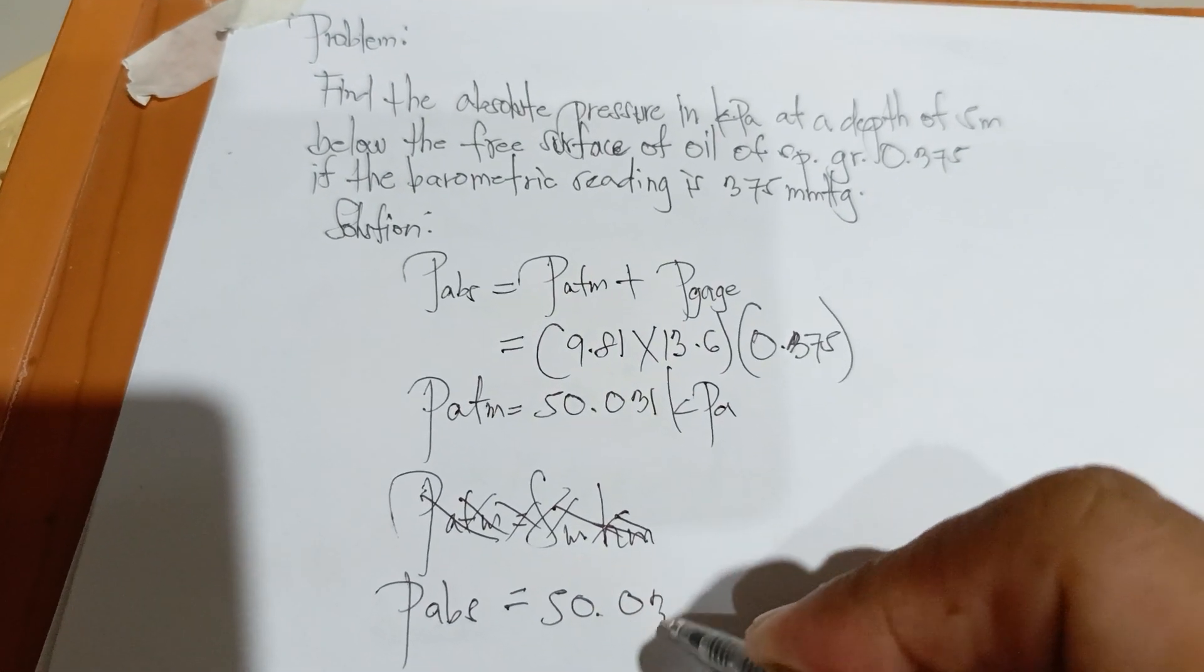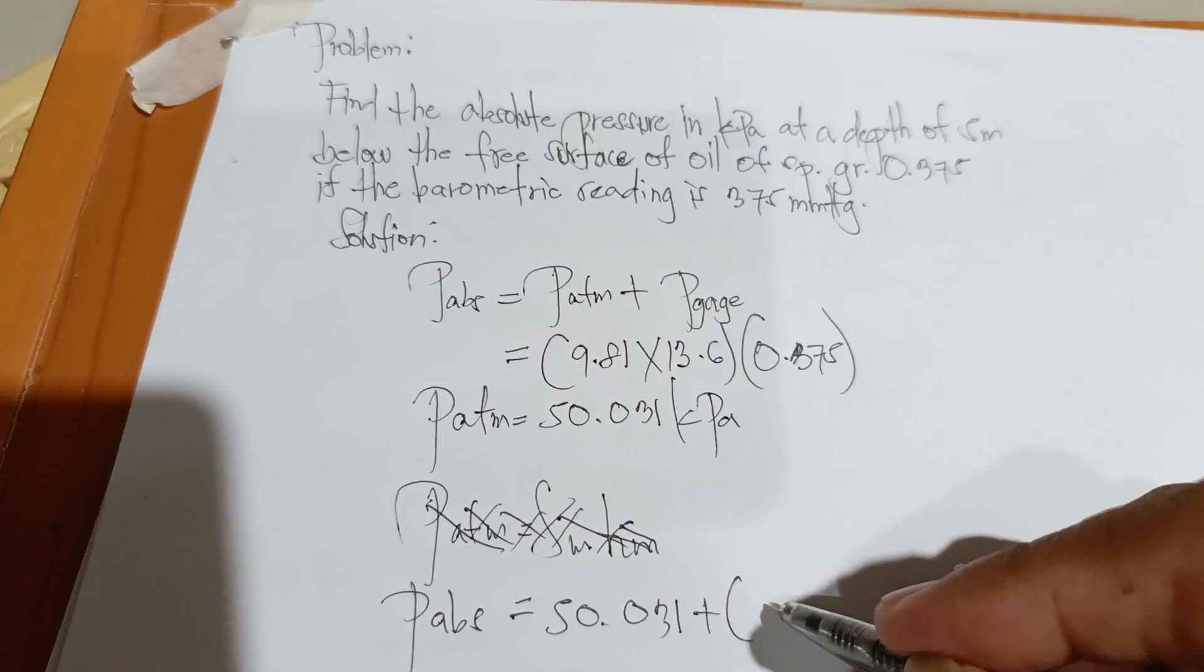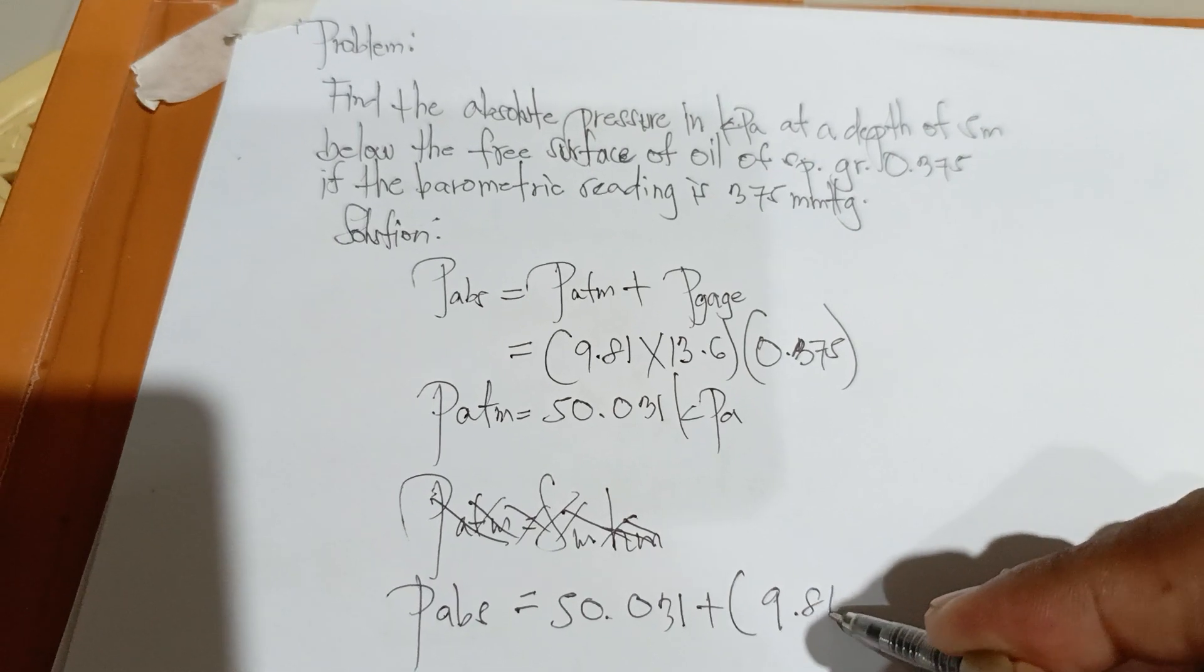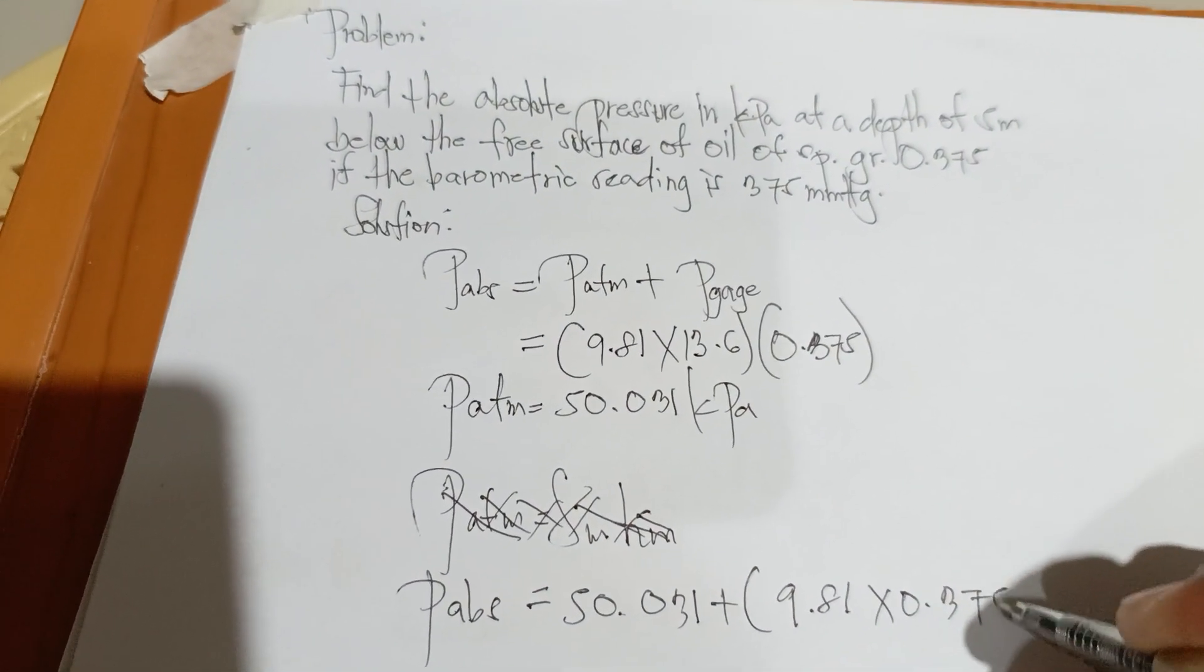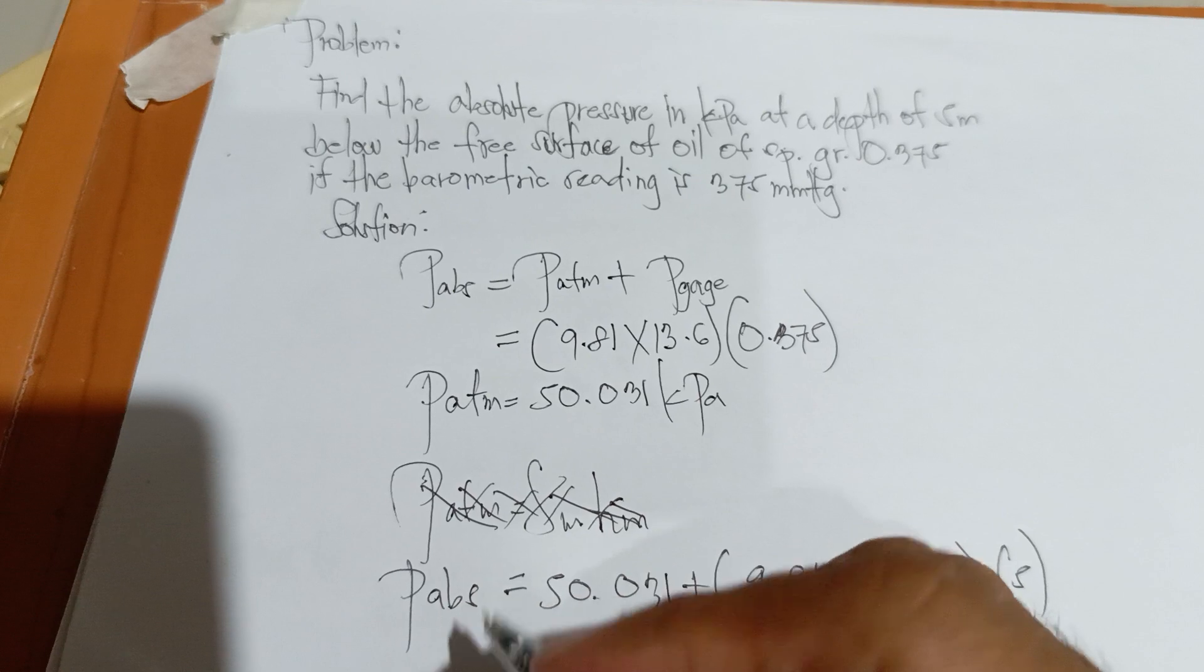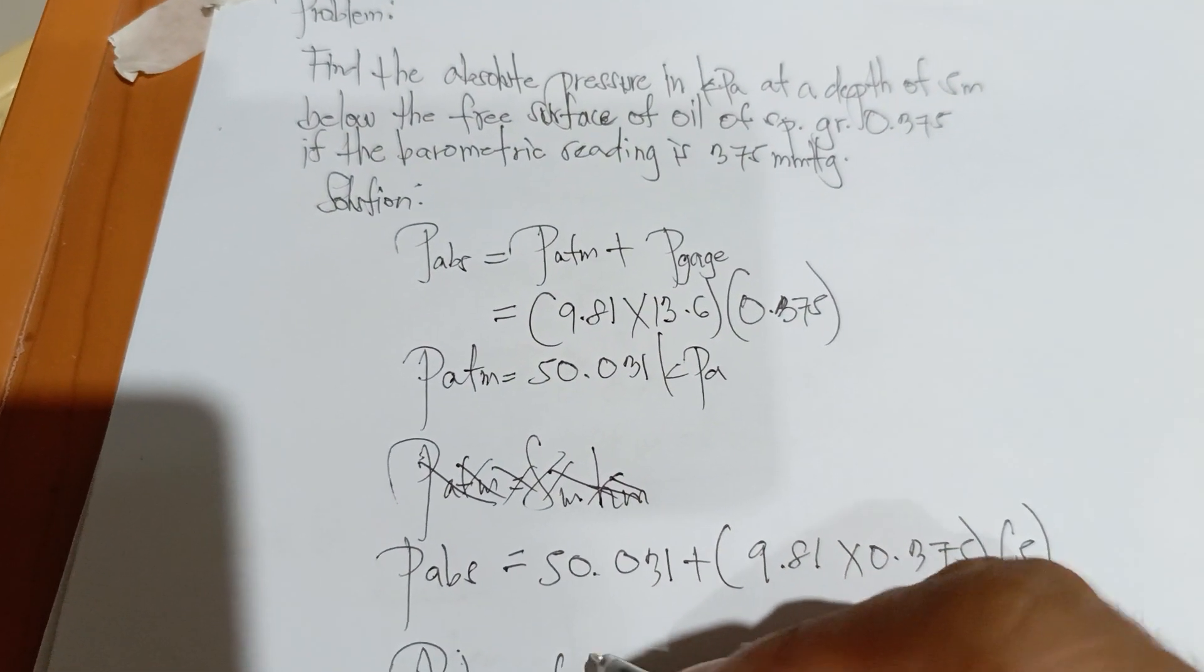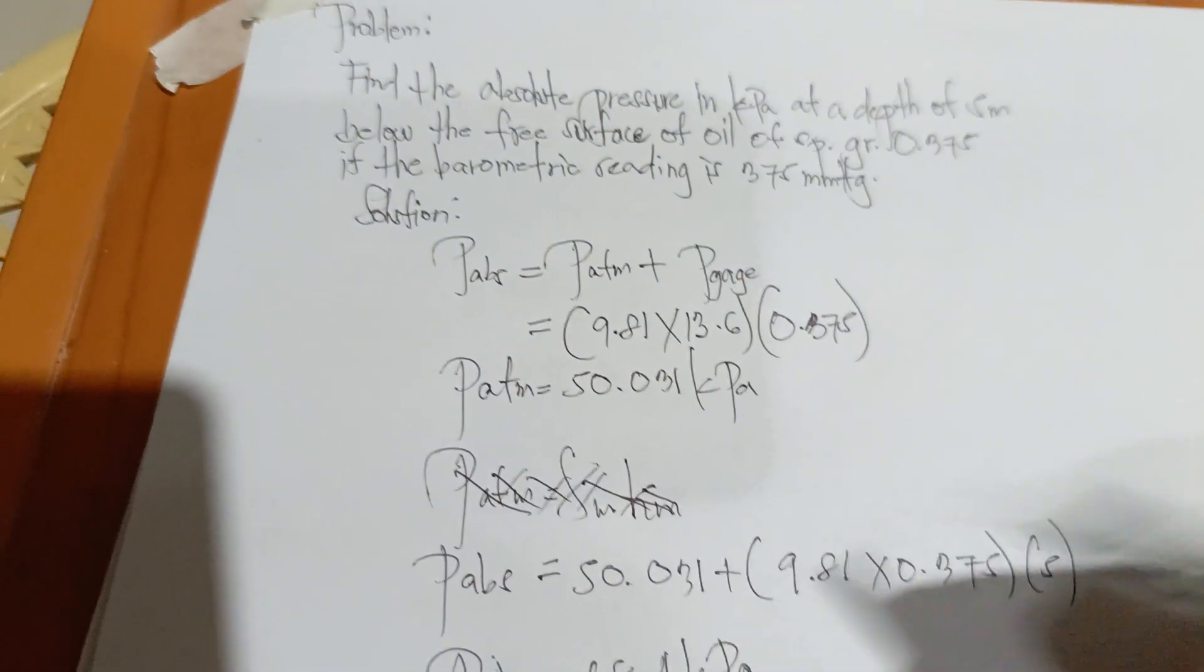50.031 plus 9.81 times 0.357 times 5. Pressure of absolute equals 68.4 kilopascals.